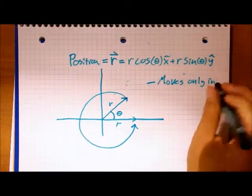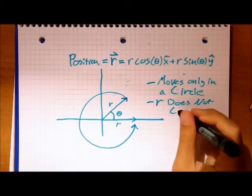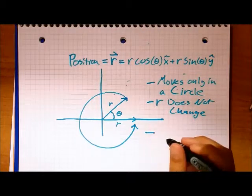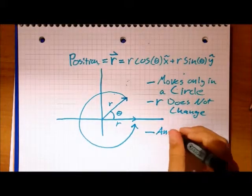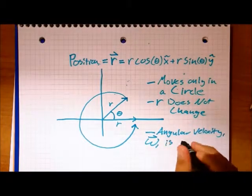We can immediately notice a couple of things about our equation: that it moves only in a circle, which makes things easy, that the radius does not change, and that the angular velocity is constant. We can easily graph this in an x and y coordinate plane, as shown.